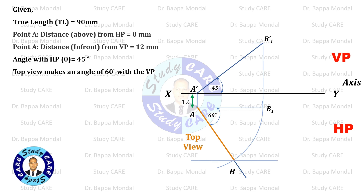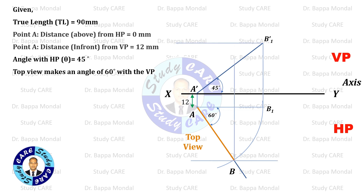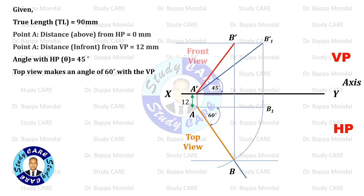Then draw a vertical reference line from that point to the topmost horizontal line. Connect A' to B'. So, A'B' is the front view.